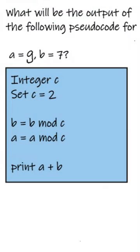What will be the output of the following pseudocode? We have given two variables a and b containing values 9 and 7 respectively.